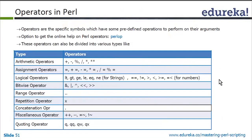Operators in Perl. Perl has very rich operators, which are very similar to C or C++, with some minor differences. Operators are specific symbols which have predefined operations to perform on their arguments. The option to get online help for Perl operators is PerlOP.